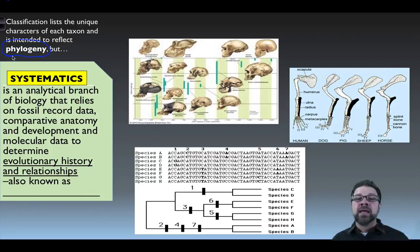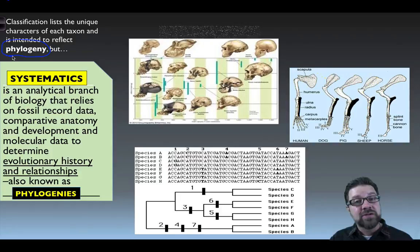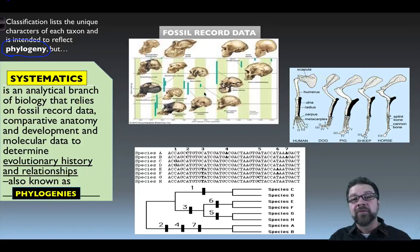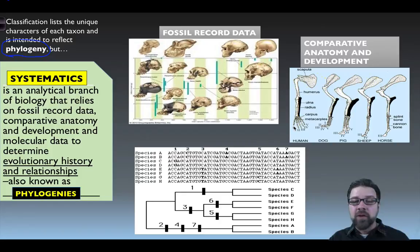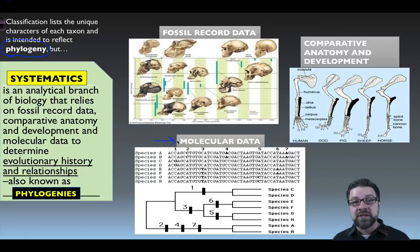Systematics is an analytical branch of biology that relies on fossil record data, comparative anatomy, embryonic development, and molecular data to determine evolutionary history and relationships, which we call phylogenies. Fossil record data can connect one type of animal to another. Comparative anatomy looks for the same structures reappearing across species. Molecular data examines the A's, T's, C's, and G's in the genome of various species to find connections in DNA and RNA.